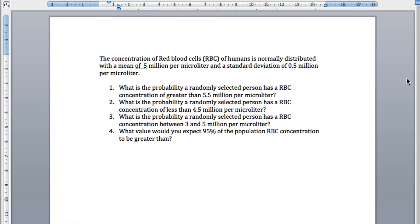This time we're looking at the normal distribution with some basic normal calculations. We're looking at the concentration of red blood cells, the cells that carry oxygen in the bloodstream. In humans, we know it's normally distributed with a mean of 5 million per microliter and a standard deviation of 0.5 million per microliter. What is the probability a randomly selected person has a red blood cell concentration greater than 5.5 million per microliter?